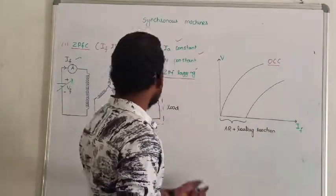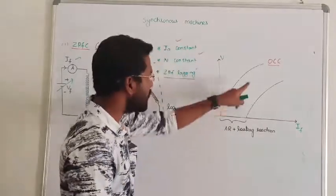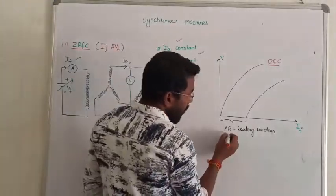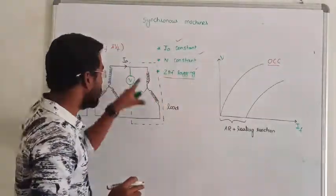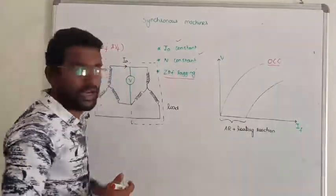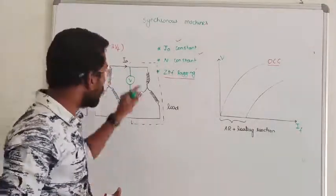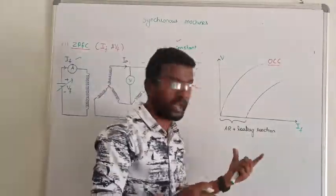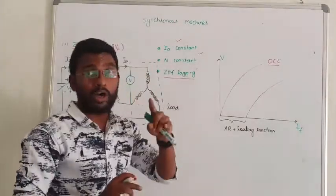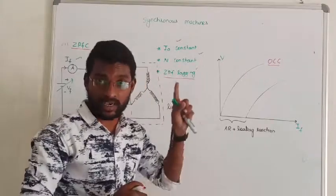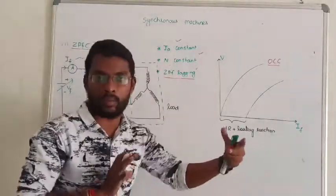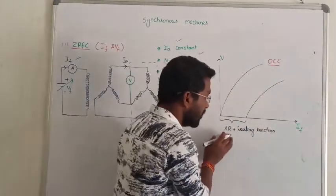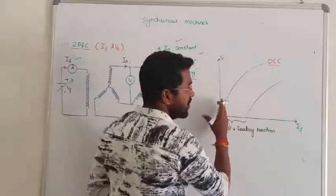If we consider zero power factor lagging, it is almost the same as open circuit characteristics. But what is the difference? In case of zero power factor lagging, armature reactions and leakage reactance are present when you have a load, and the armature current is constant. We are maintaining this armature current as constant. Due to the presence of load, this armature current is present — there is no armature current at no load. Armature current causes armature reaction; armature current and field current together produce armature reaction. This curve is the open circuit characteristics, but due to armature reaction and leakage reactance, this curve is shifted to some extent.